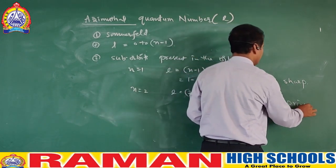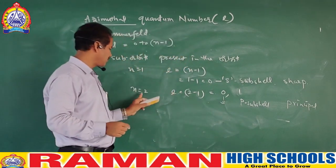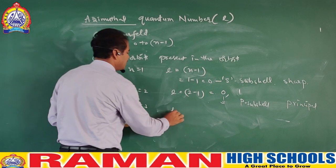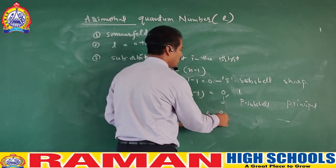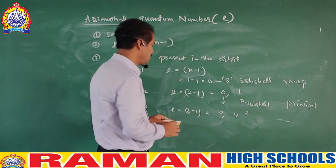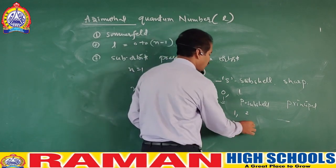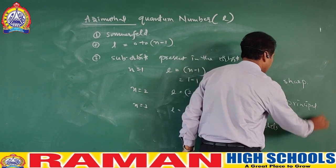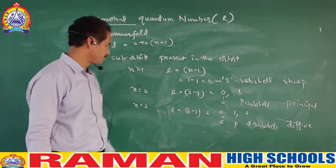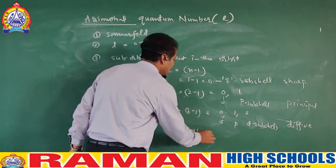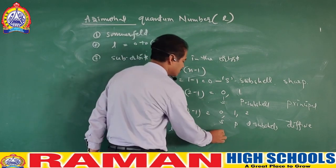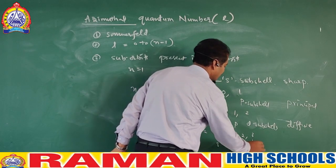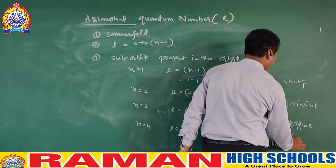P means the principal sub-shell. When n is 3, l = 0, 1, and 2 — giving 3 sub-orbits: 0 is S sub-shell, 1 is P sub-shell, and 2 is D sub-shell. D sub-shell is called the diffuse sub-shell. When n is 4, l = 0, 1, 2, and 3 — with 3 standing for F, the fundamental sub-shell.